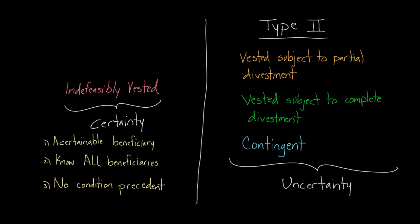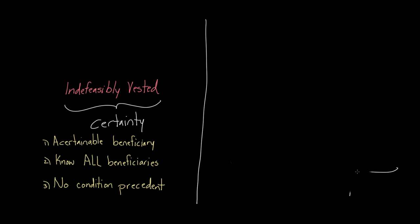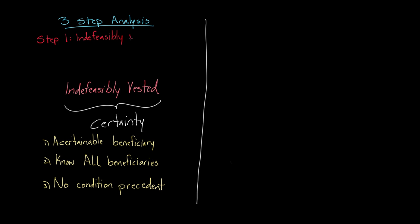On the flip side, what I'm calling type two remainders have either some unascertainable beneficiary or some unsatisfied condition precedent, because by logic, if it's not an indefeasibly vested remainder, it will fall into the type two category. I'm going to suggest a three-step analysis to help you figure out what type of remainder you have. Step one is always to ask: is this an indefeasibly vested remainder? If not, it has to fall into the type two remainder category.